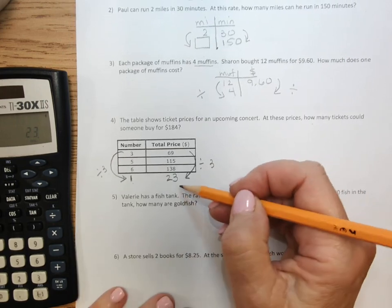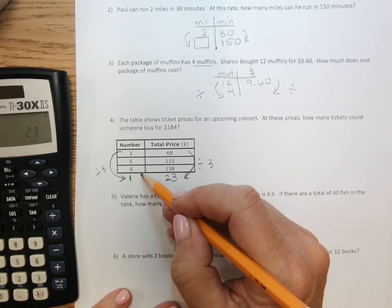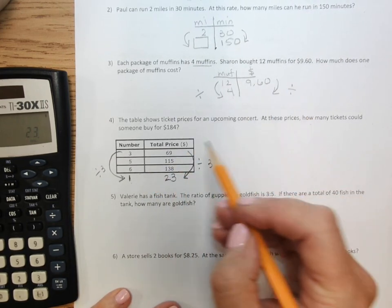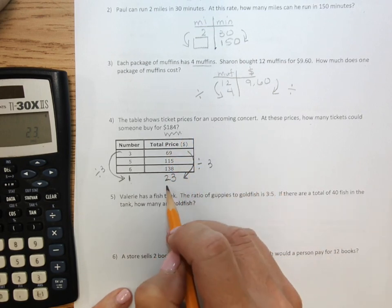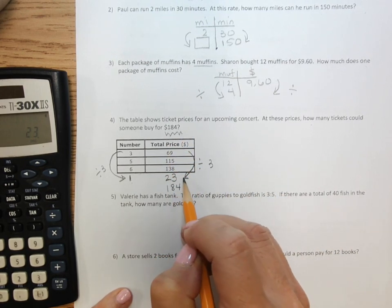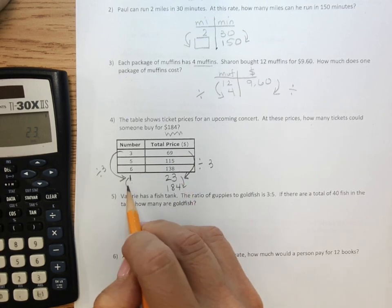So $23 is the cost per ticket and then I want to know how many tickets could I get for $184. Find out what your helper is and use it over here.